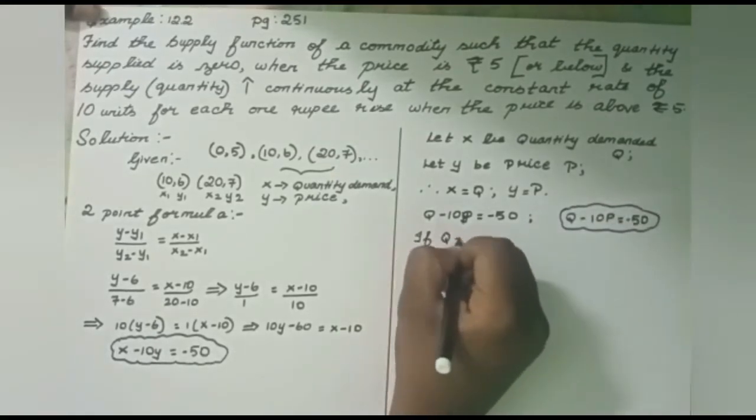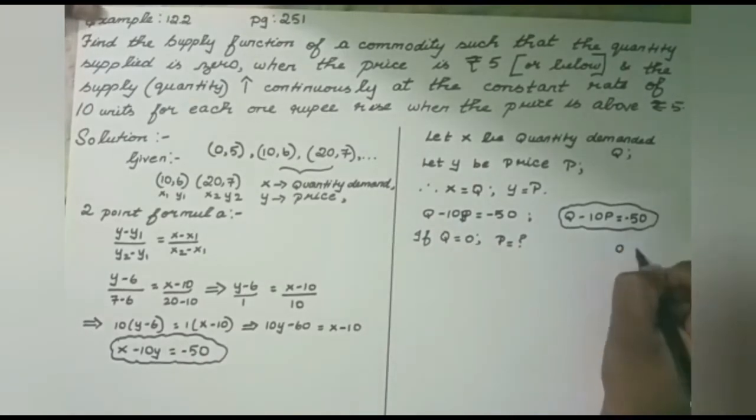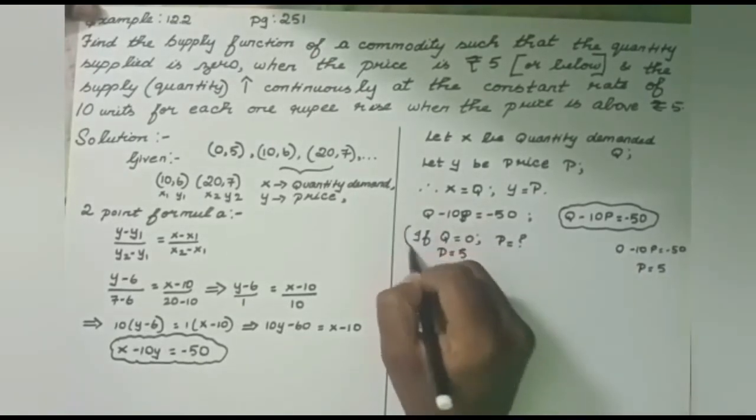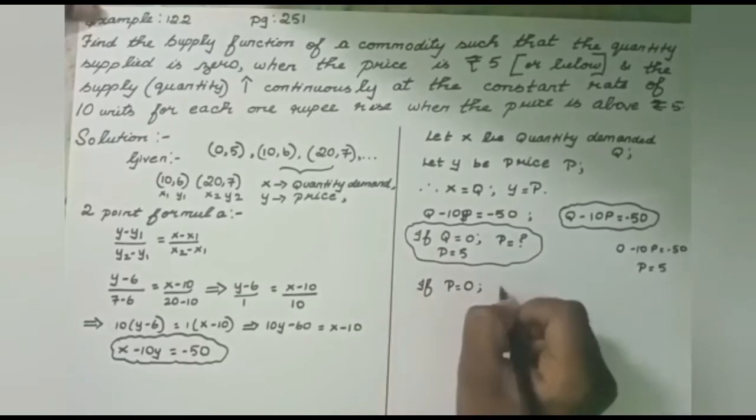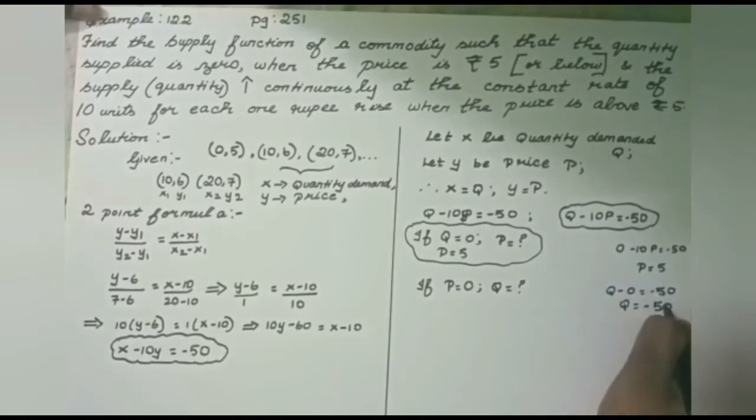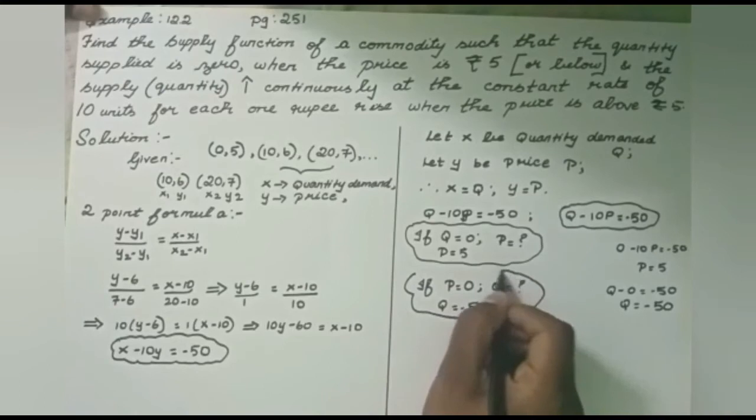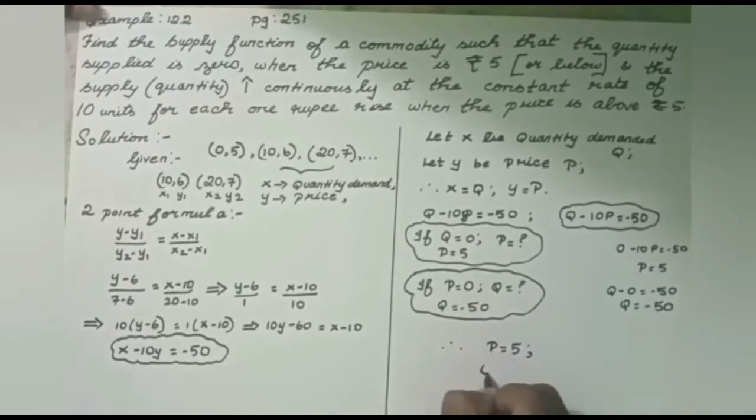As in the previous sum, if we have Q equal to zero, we can find the P value. Substituting Q equals 0 in the equation gives minus 10P equals minus 50, the minus signs cancel, giving 10P equals 50, so P equals 5. This is the first condition. Now we know the P value answer, we need to find the Q value answer. From the equation Q minus 10P equals minus 50, if we substitute P equals 5, we get Q minus 50 equals minus 50, so Q equals 0. We now have two values: P equals 5 and Q equals minus 50. We can verify this by checking the first equation Q minus 10P equals minus 50.